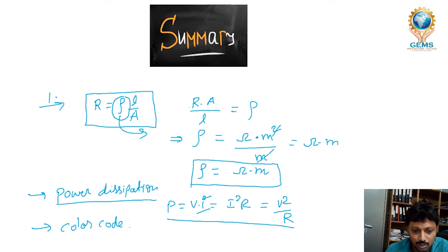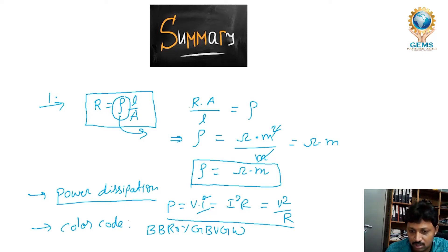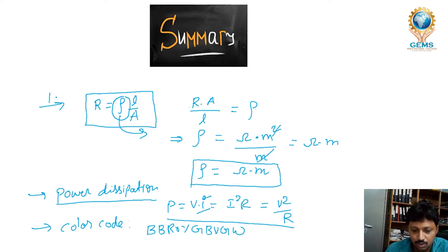Using the color code mnemonic: B.B. Roy Great Britain Very Good White — those are the names of the colors to remember. Gold is 5% tolerance, silver is 10%, and others are 20%.